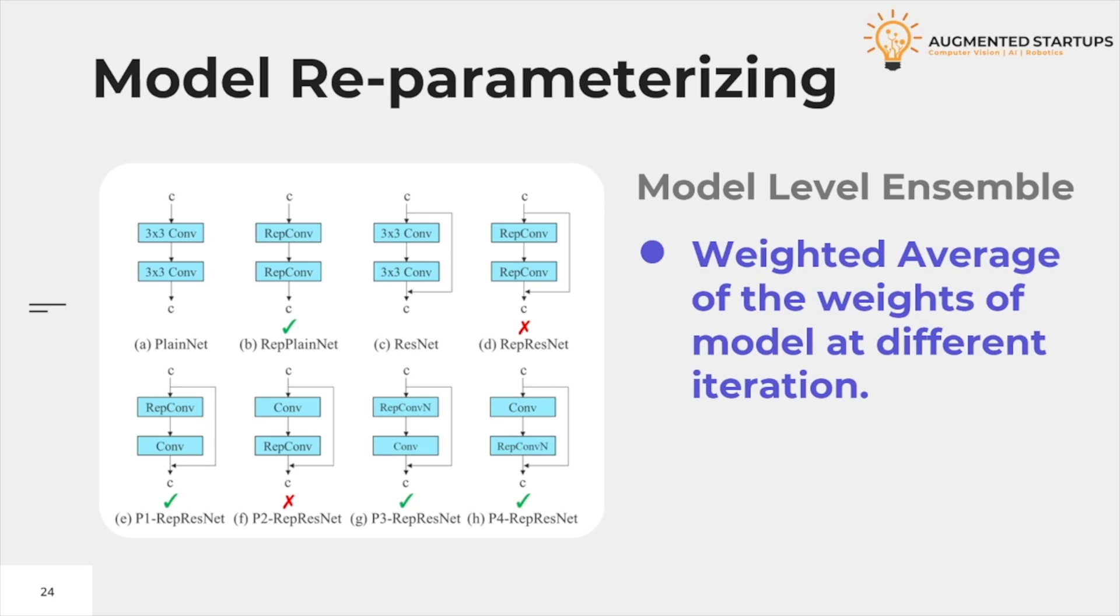In research, there has been decent focus on model re-parameterization. Each piece of the network has its own re-parameterization strategies. The YOLOv7 authors use gradient flow propagation paths to see which model in the network should be re-parameterized and which strategies should not.